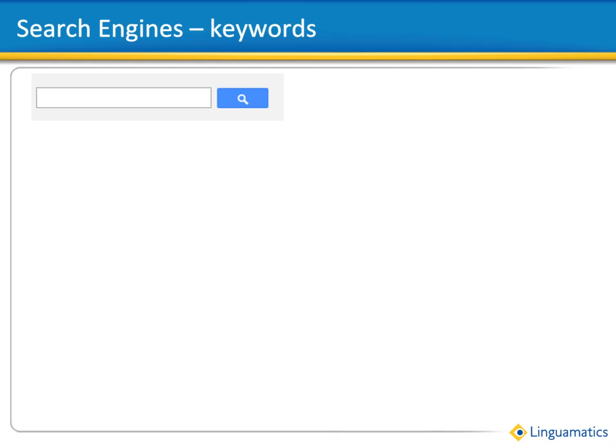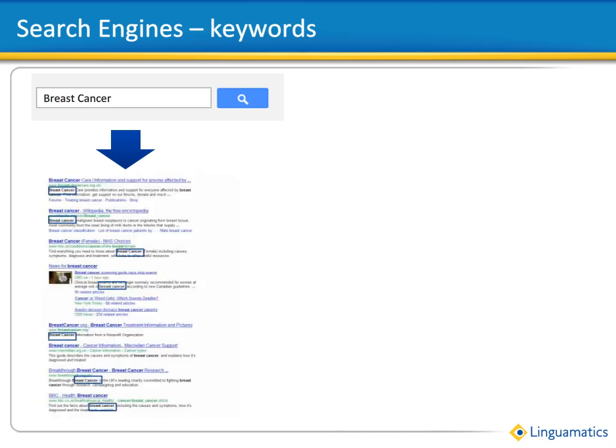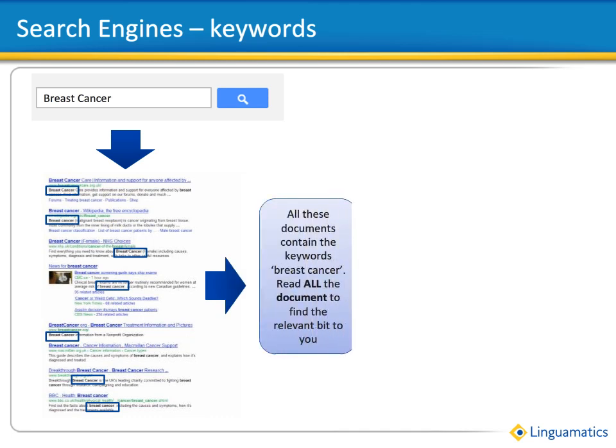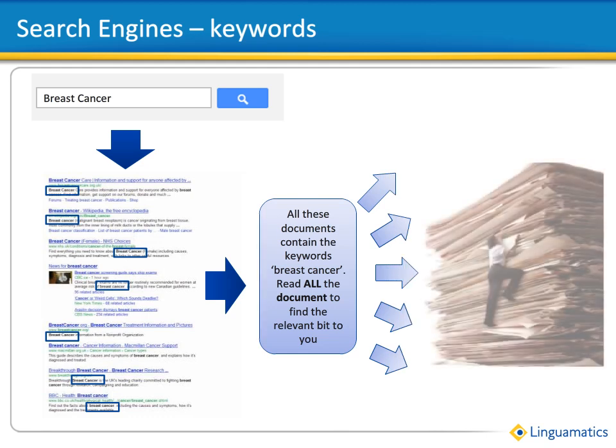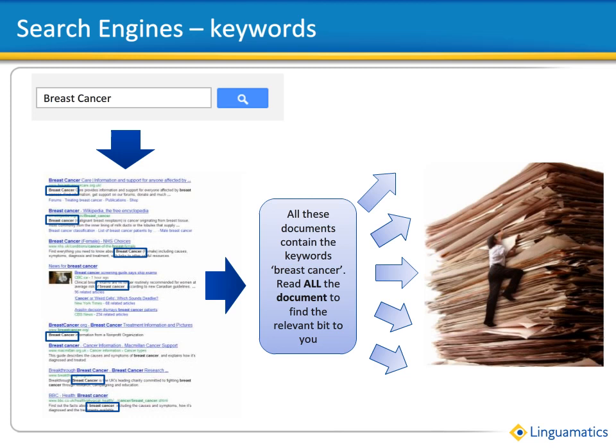First, let's start with something that most of us use every day: keyword search. Most search engines take this approach and it's important to understand what is going on when you use them. Typically, you type in one or more keywords — in this case, breast cancer — and the search engine finds all the documents that have those keywords in them. The search engine brings back links to the documents, telling you that this list of documents all contain the words breast and cancer. Then it's up to you to read through each document and decide whether they are of relevance.